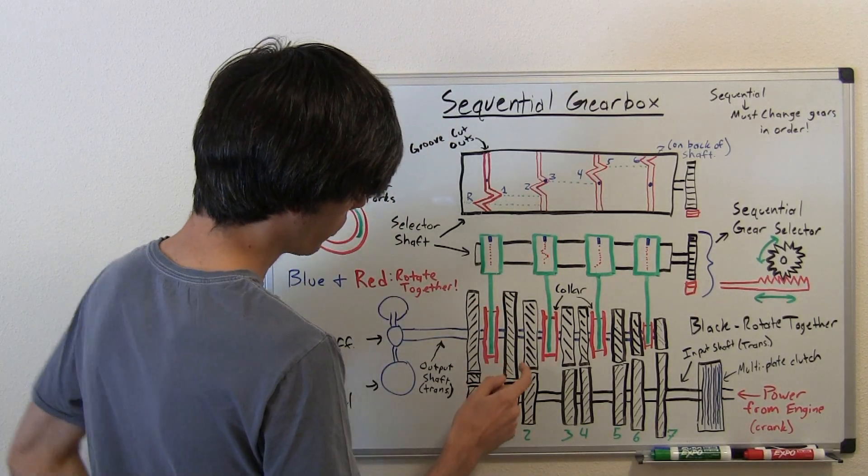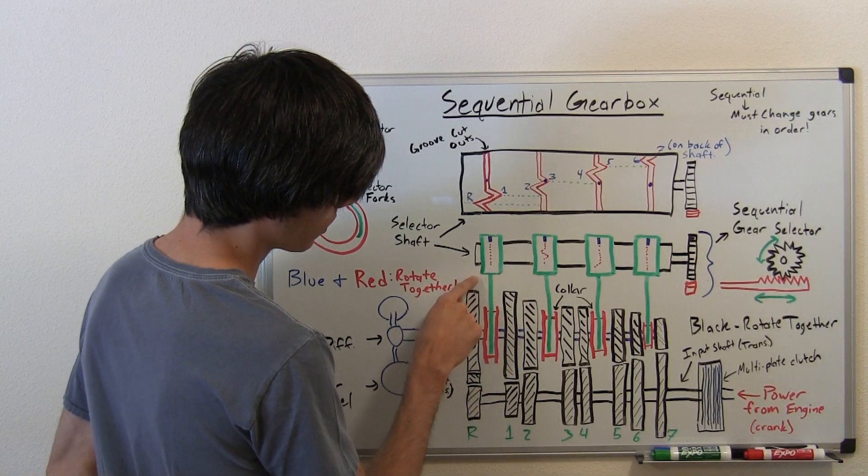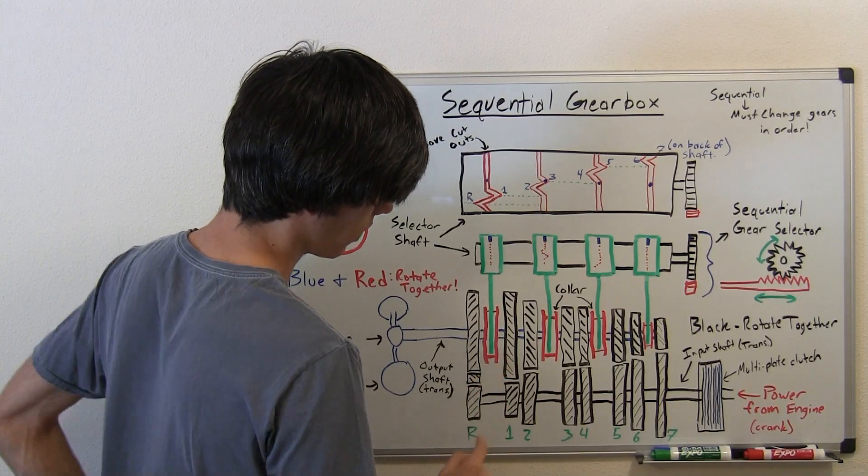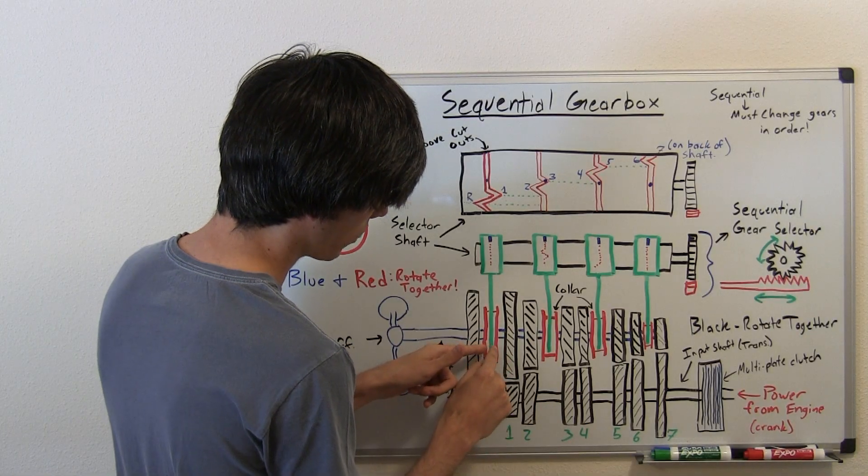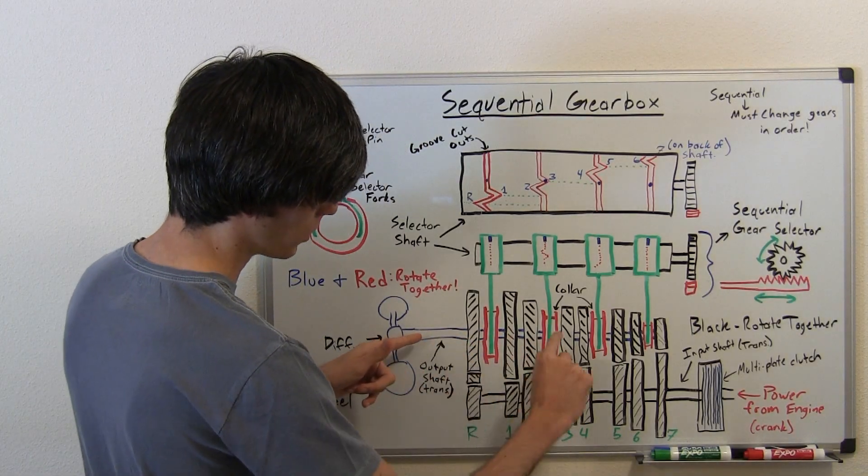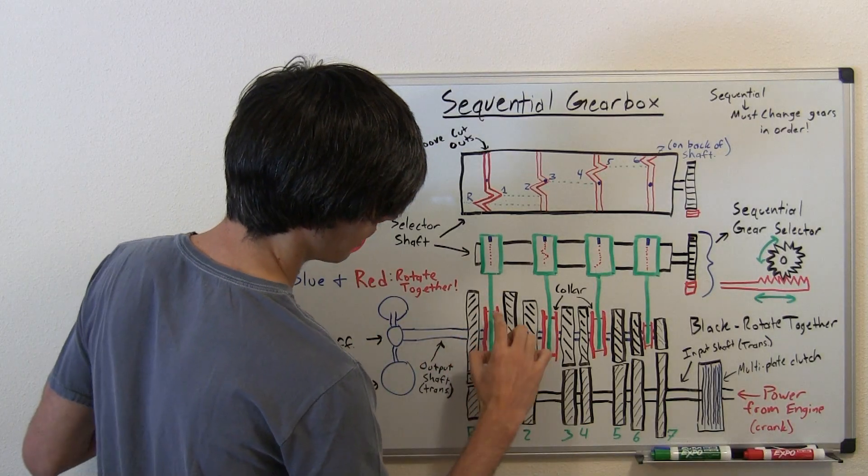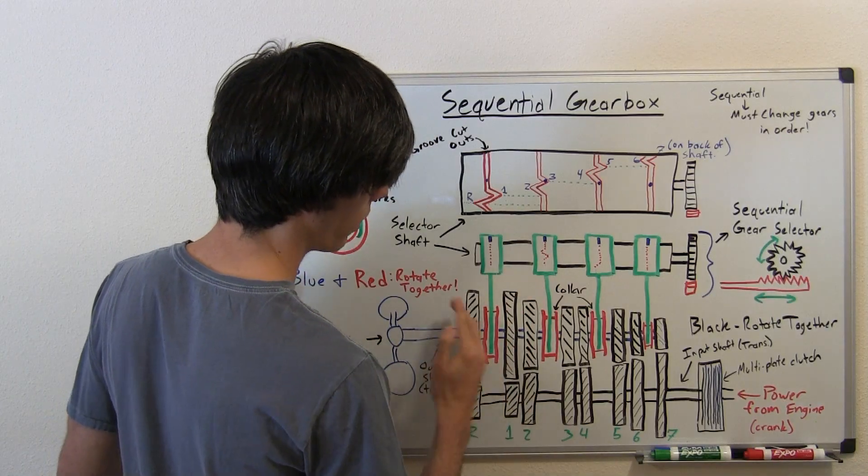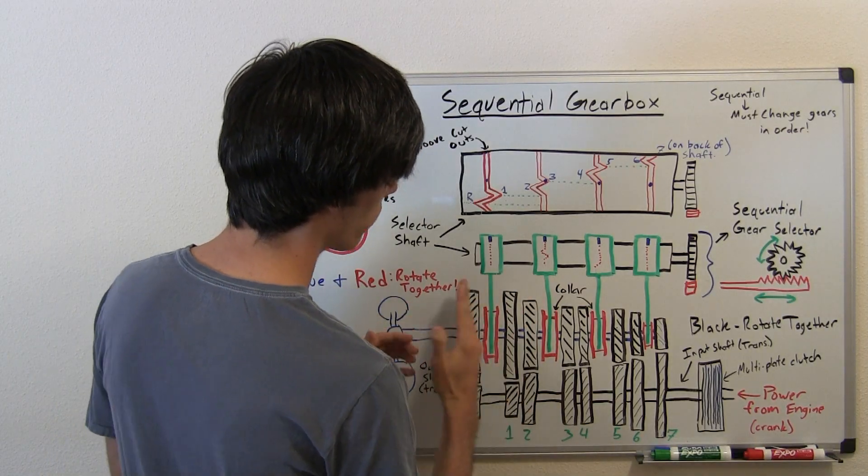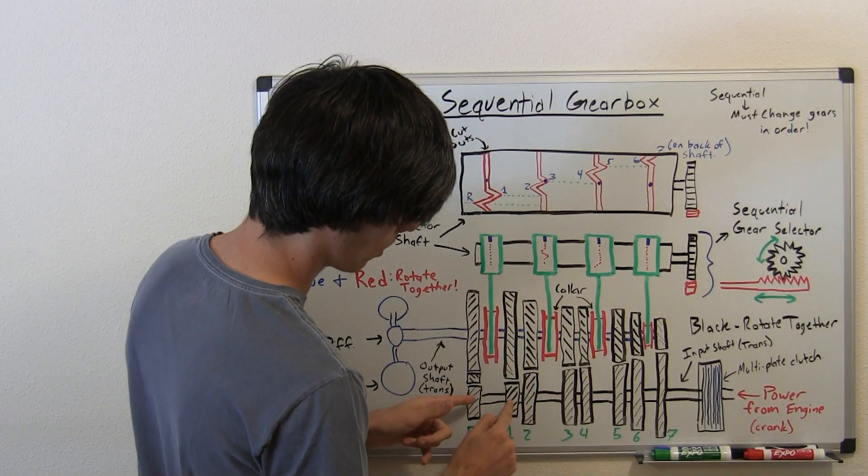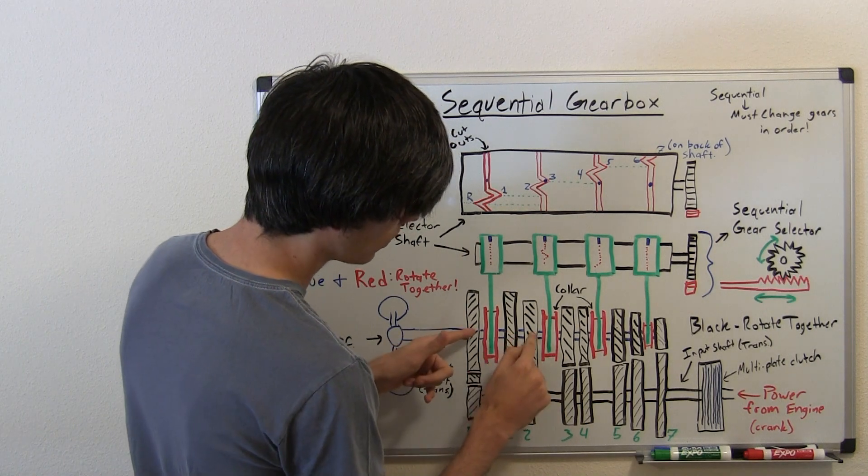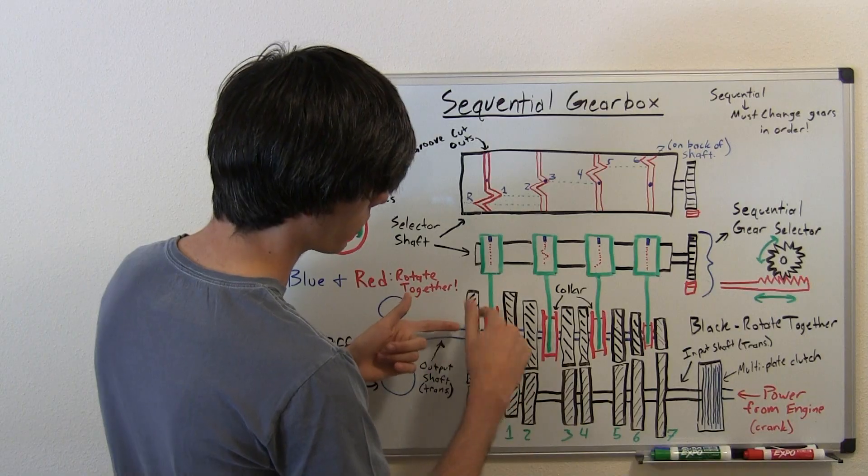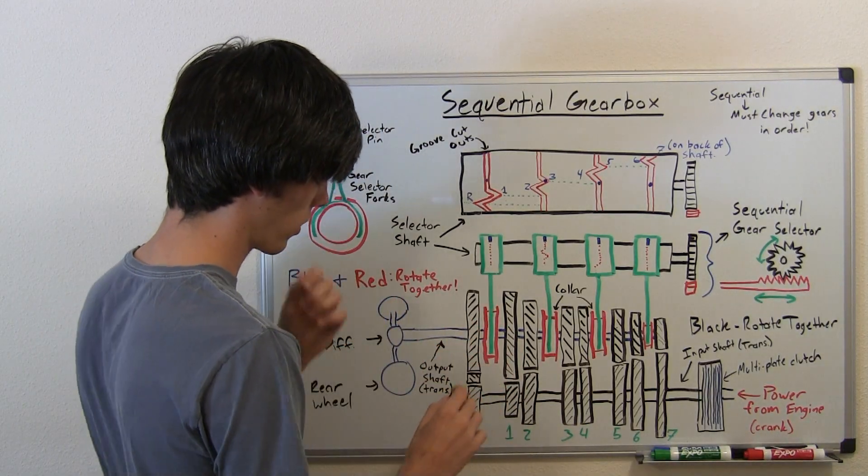What's going to happen is this gear selector is going to match this collar with this gear. This collar is on a spline on this blue shaft, so this red collar can move on this blue shaft. It's splined on it, so it rotates with it, however it also can move along it. Whereas these here are basically fixed. And these gears are all on bearings, so they're rolling around this blue shaft, freely rotating.